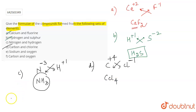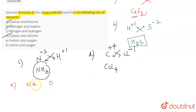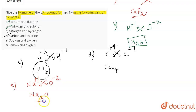For part E, you have sodium and oxygen. Sodium has a tendency to lose one electron and gain a +1 charge. Oxygen has a tendency to gain two electrons and has a -2 charge. Interchanging the valencies gives the formula Na₂O.